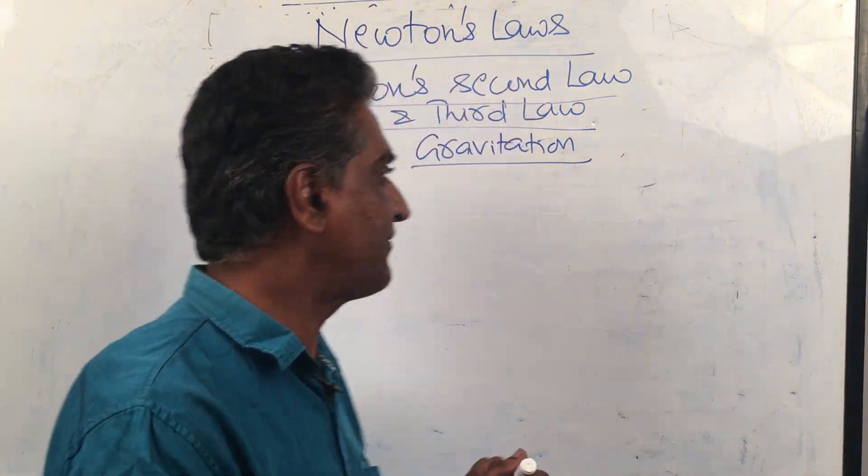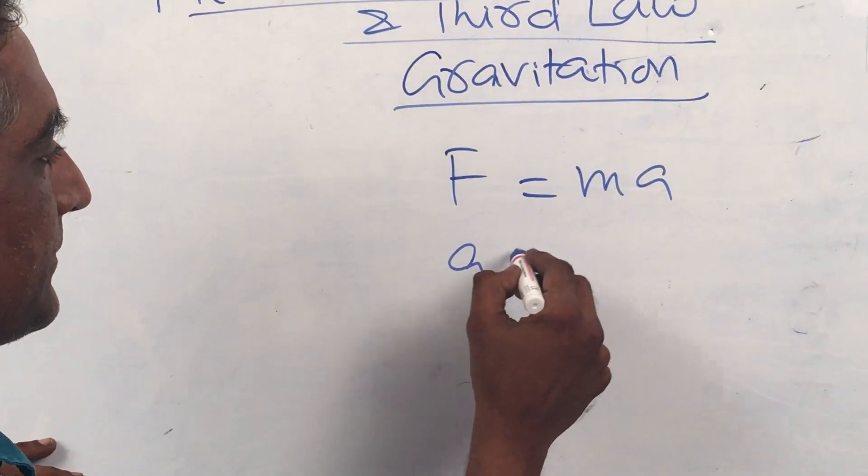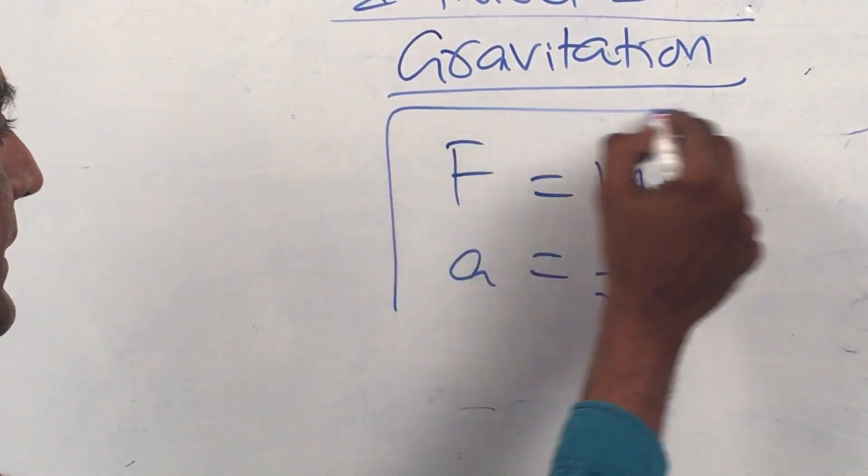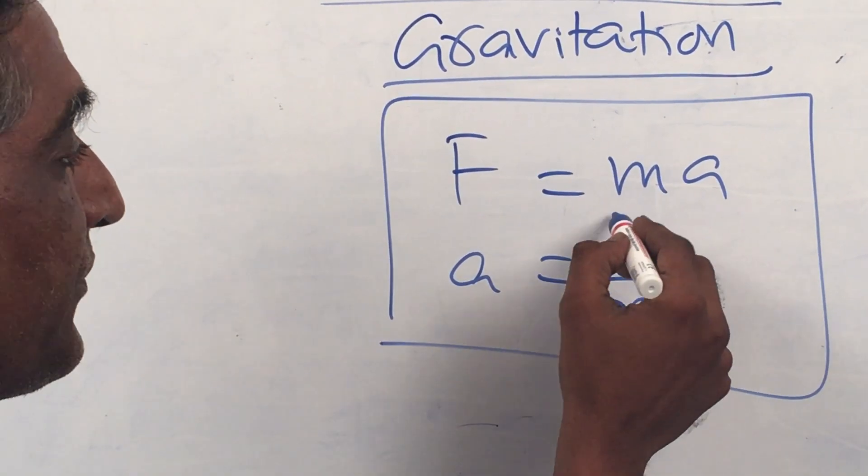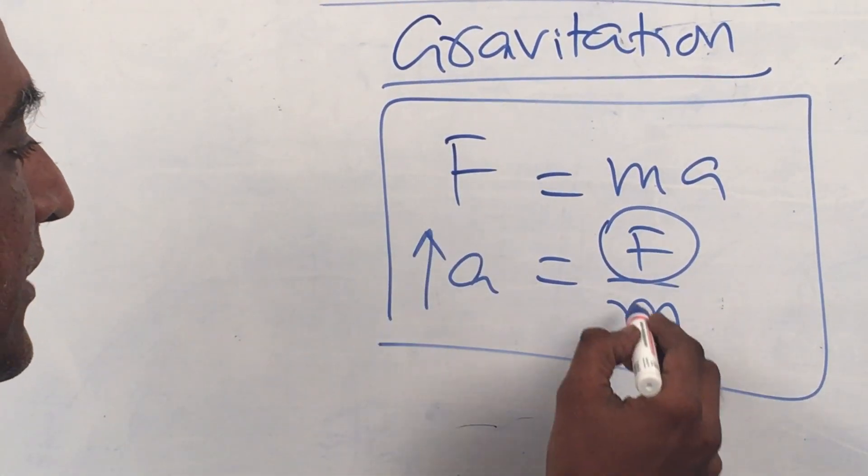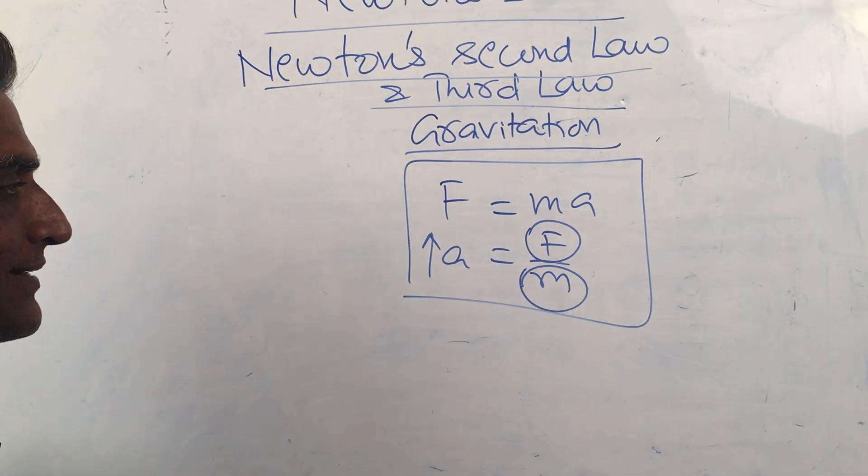Newton's second law is F is equal to MA or A is equal to F by M. Both are the same thing. If you increase the force, A increases. If you increase the mass, A decreases. We saw it in numbers also in the last class.